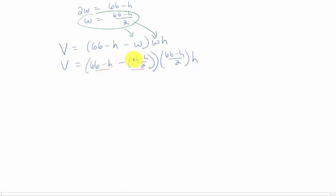So if you have something, say x, and you're subtracting a half of that x, you should just still be left with half of that x. So what's in this first set of parentheses is just going to turn out to be 66 minus h over 2.